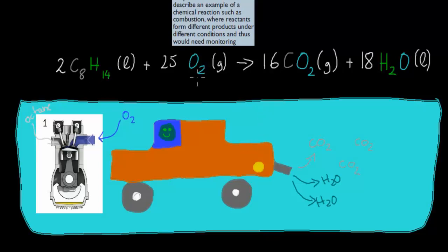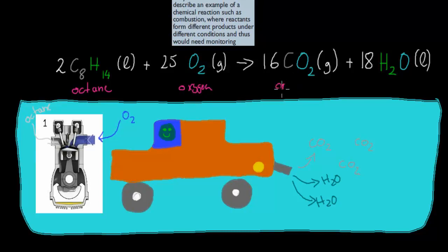This chemical equation here might look familiar. C8H18 is octane, and O2 is obviously oxygen, and this is the combustion reaction when octane combusts with oxygen to form carbon dioxide — CO2 — and water.